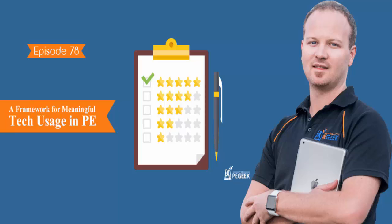So far: Substitution is directly substituting technology with no functional change; Augmentation is using technology with some functional improvement. The next part of the SAMR progression is Modification — and this is when things start to get really interesting. This is when technology allows for significant task redesign. For example, rather than writing a report, students may be able to speak their words and turn that report into a narrated piece with music and different elements — something they simply cannot do with a handwritten piece of paper.